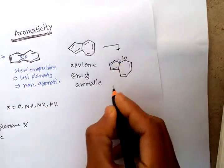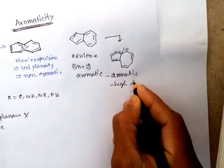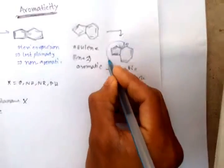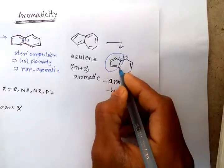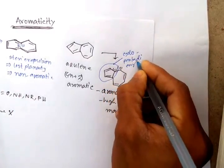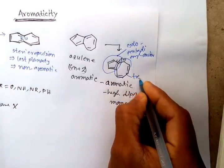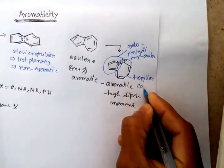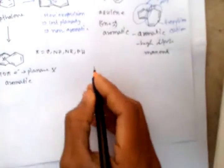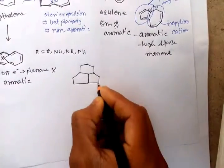Both compounds, both cycles, are aromatic and there is a high dipole moment. The first part is the cyclopentadienyl anion and the second part is the cycloheptatrienyl cation — the tropylium cation. Now let's discuss another system.